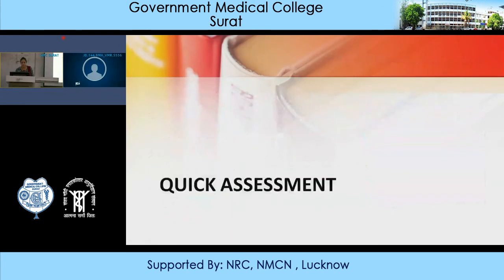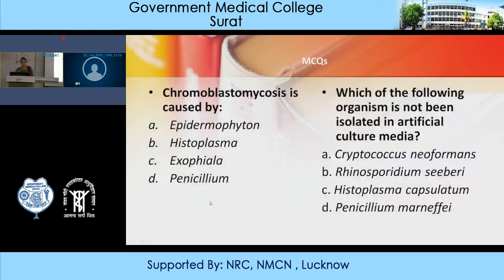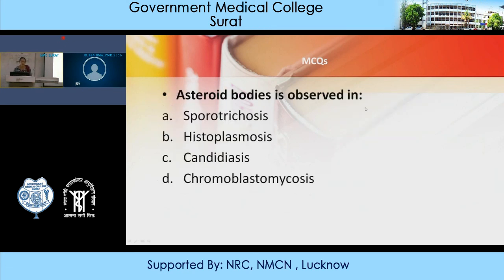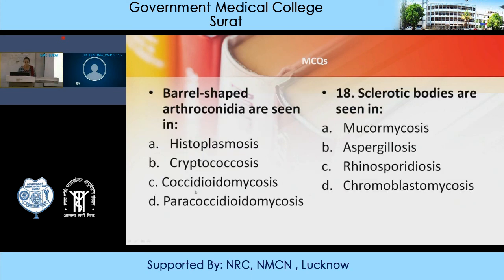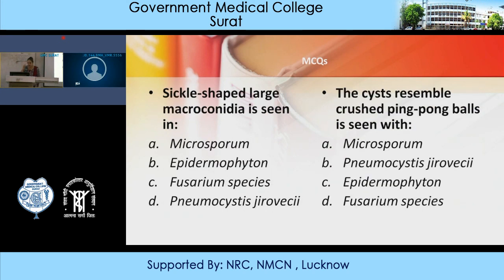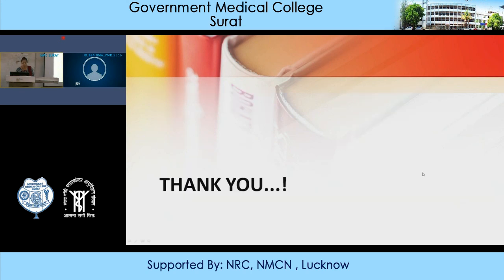For review MCQs: chromoblastomycosis is caused by Exophiala species among others. Which organism has not been isolated in artificial culture media? — Rhinosporidium seeberi. Asteroid bodies are observed in sporotrichosis. Barrel-shaped arthroconidia are seen in Coccidioides (a deep mycosis). Sclerotic bodies are seen in chromoblastomycosis. Sickle-shaped large macroconidia are seen in Fusarium species. Cysts resembling crushed ping-pong balls are seen in Pneumocystis jirovecii.